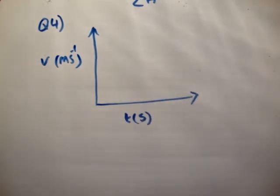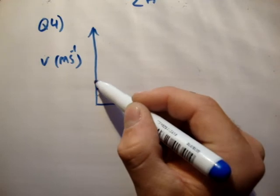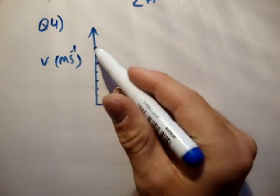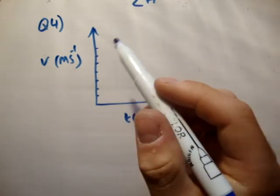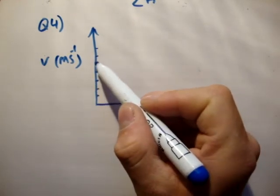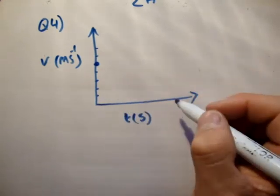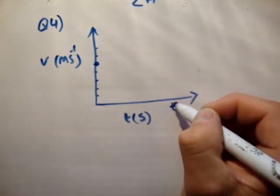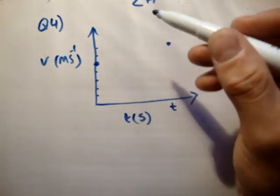So we know in this case the train accelerates from 50 to 70 meters per second. We'll mark 10, 20, 30, 40, 50, 60, 70 on the axis. So at time t equals 0 the velocity is 50 meters per second. And we know that at time t equals t, an unknown time, the velocity is 70 meters per second.